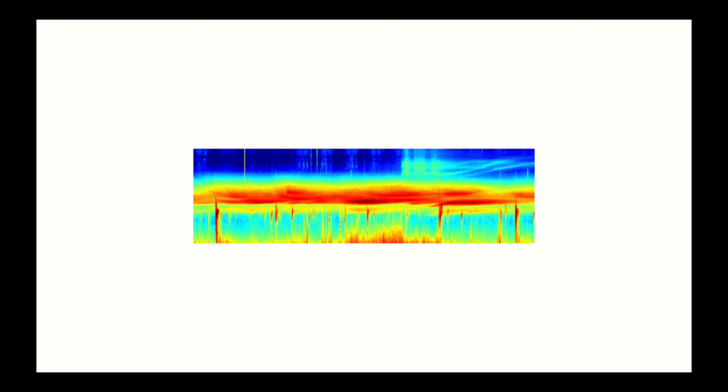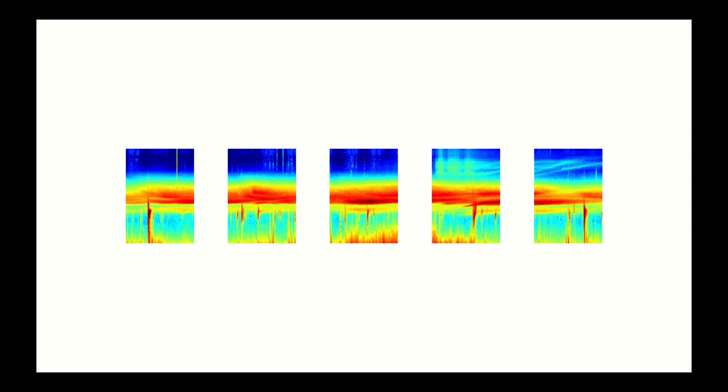Sequence data comes in many forms. Audio is a natural sequence. You can chop up an audio spectrogram into chunks and feed that into RNNs. Text is another form of sequence. You can break text up into sequences of characters or sequences of words.